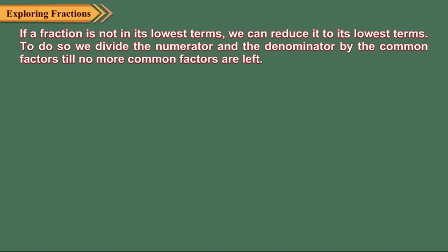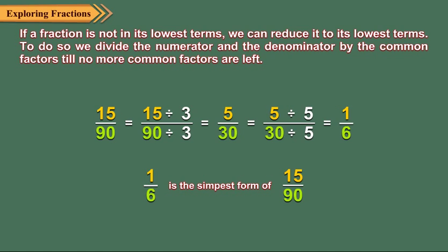If a fraction is not in its lowest terms, we can reduce it to its lowest terms. To do so, we divide the numerator and denominator by the common factors till no more common factors are left. Let us reduce fifteen upon ninety to its lowest terms. We divide step-by-step by their common factors three and five. So, one upon six is the simplest form of fifteen upon ninety.